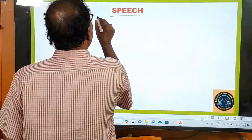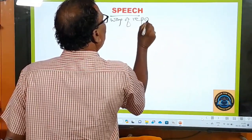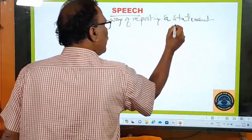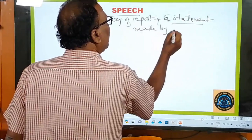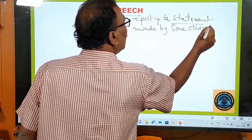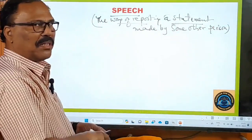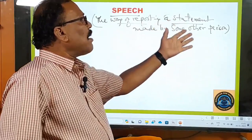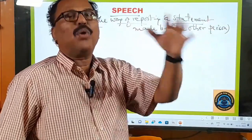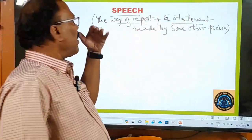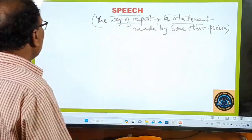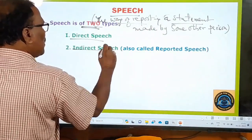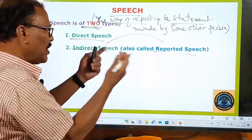Speech means the way of reporting — reporting a statement made by some other person. He made some statement and that statement we are reporting, so that is called speech. Speech is of two types: direct speech and indirect speech. Indirect speech is also called reported speech.